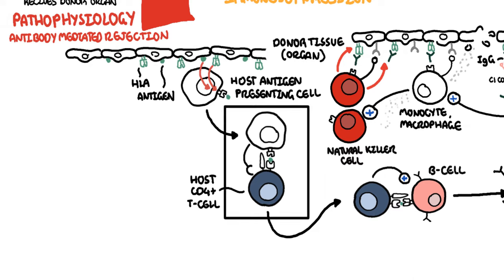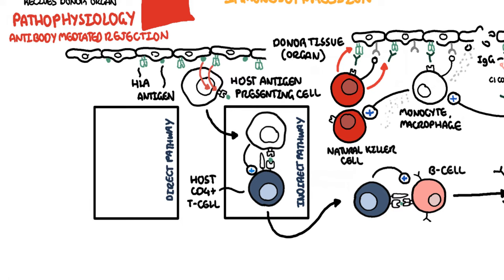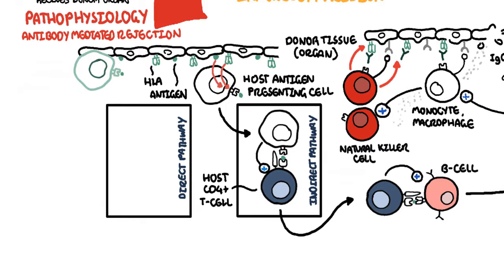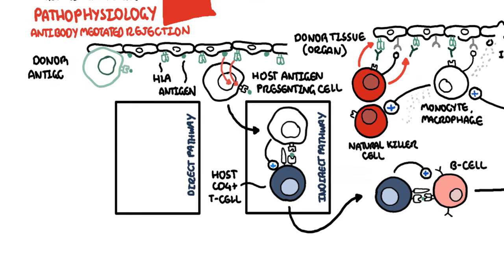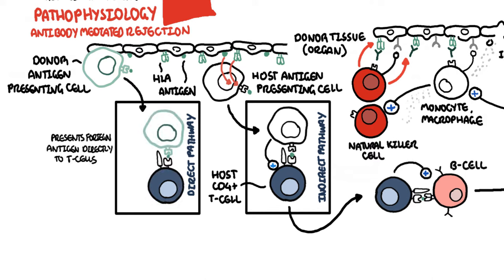The initial interaction between the host's antigen-presenting cell and the host's T-helper cell is the indirect pathway. The direct pathway is when the donor's antigen-presenting cell, which is now present in the recipient's body, presents the foreign antigen directly to the host's T-cell.